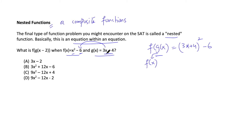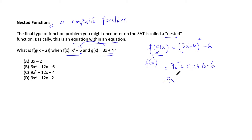So f(g(x)) becomes (3x + 4)² − 6. Expanding this quadratic: 9x² + 2·(3x)·4 + 4² − 6, which gives 9x² + 24x + 16 − 6 = 9x² + 24x + 10. This is f(g(x)).